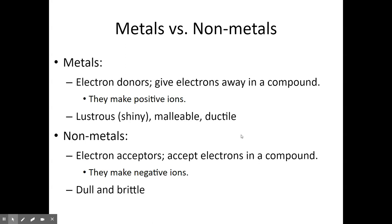Non-metals, on the other hand, are typically electron acceptors — they will accept electrons when forming compounds and tend to make negative ions called anions. They are usually very dull and brittle, and are not good conductors of heat or electricity.